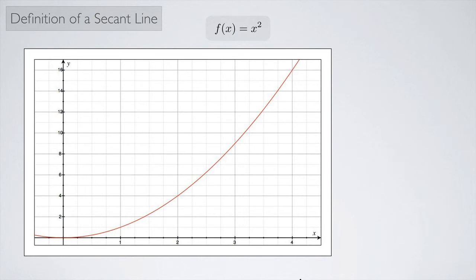So let's look at an example. Suppose I have the function f of x equals x squared. And here's a graph. This looks like your basic parabola.